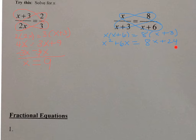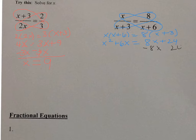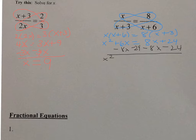So that means I'm going to move this stuff on the right over to the left side. I'm going to subtract 8x, subtract 24. Subtract 8x - I'll put it right underneath the 6x because they're like terms. And I'm going to get x squared. 6x minus 8x is negative 2x minus 24 is equal to 0.